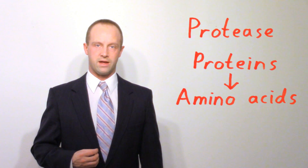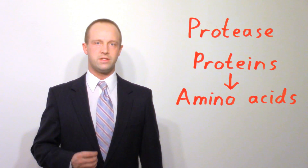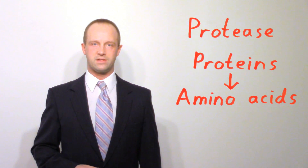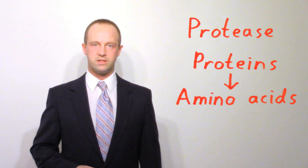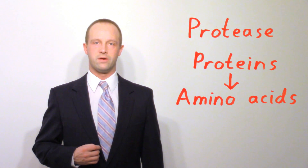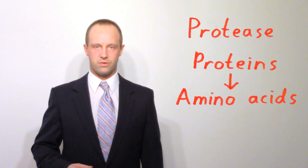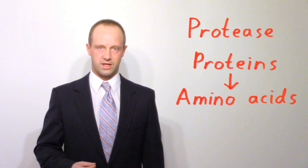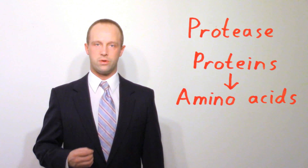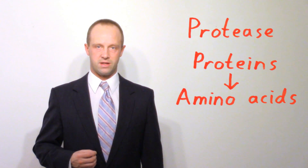The next one that you need to know about is protease. You don't need to know any specific examples of protease — you just need to know that it's produced in the stomach and the pancreas and the small intestine, and it breaks down proteins into amino acids.